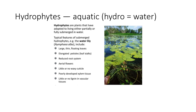Hydrophytes are those species which are adapted to live either partially or fully submerged in water. Water lily is a very common example, known as Nymphaea alba and Nymphaea lotus. These species possess large thin floating leaves, elongated petioles, reduced or shallow root systems, aerial flowers, little or no vascular tissue, and poorly developed xylem tissues.